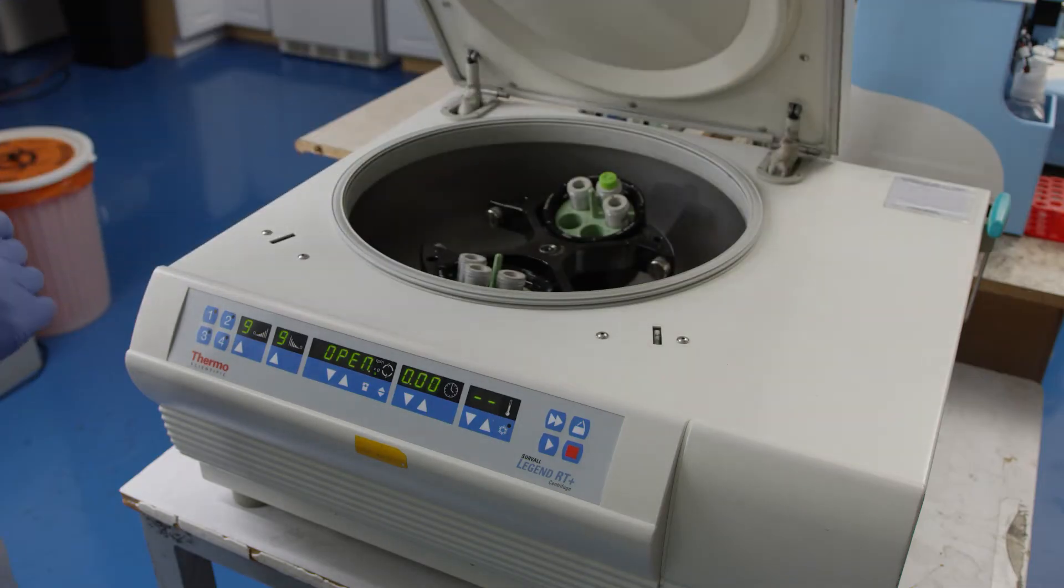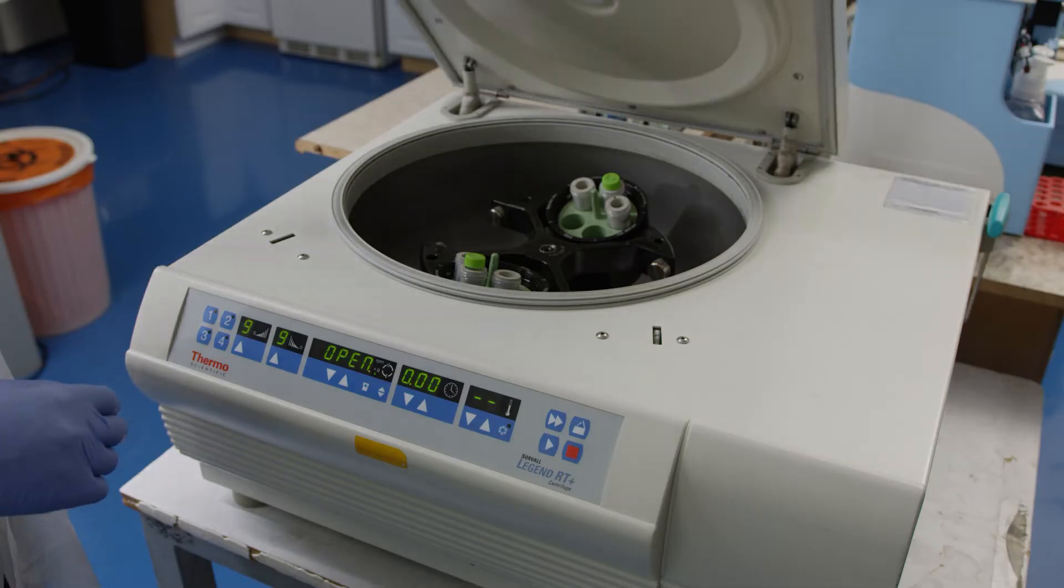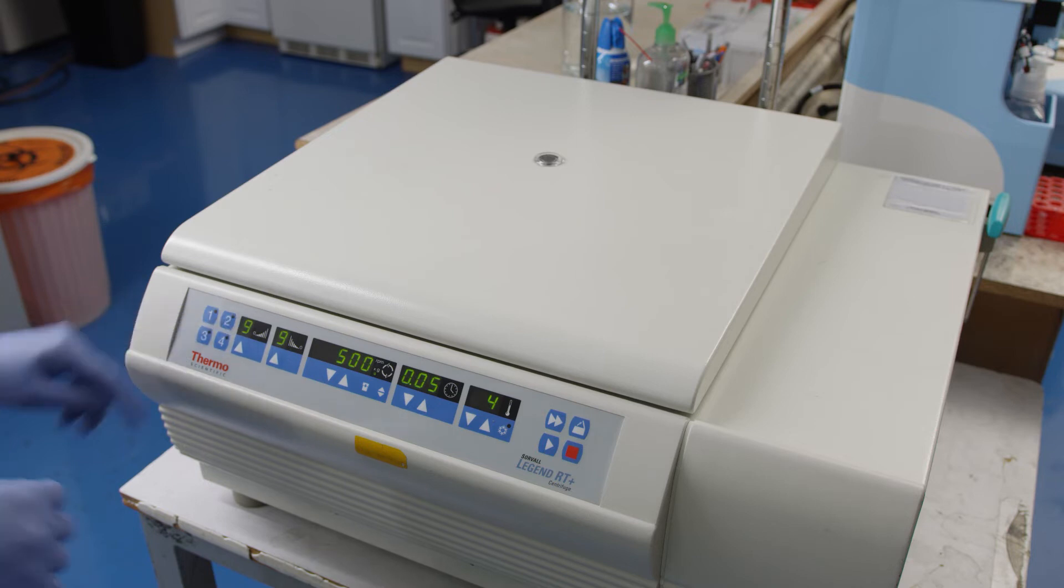After transferring the nuclei suspension to a conical tube, centrifuge the tube for 5 minutes at 500 g and 4 degrees, or at a speed appropriate for your particular tissue.